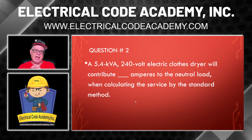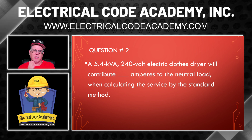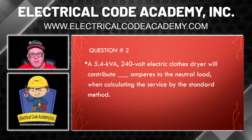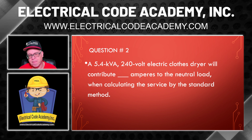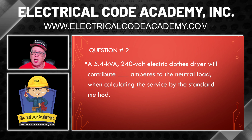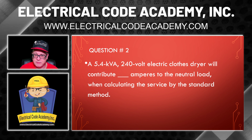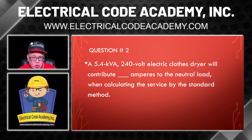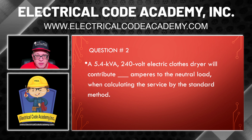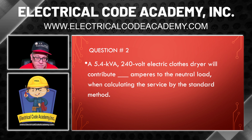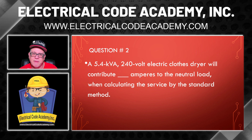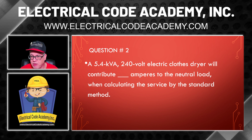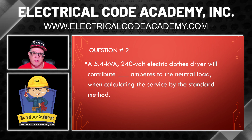Let's look at the next question. A 5.4 KVA 240-volt electric clothes dryer will contribute blank amperes to the neutral load when calculating the service by the standard method. We're calculating and looking for the contribution to the neutral load. The neutral is going to be less than what would be the ungrounded conductor value. I'm looking for amperes to the neutral load when doing this service under the standard method. So the first thing we want to look at is 220.54, which gives us the actual value we're going to use, and then we can look at 220.61B, which is for the neutral contribution.